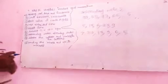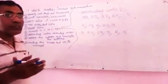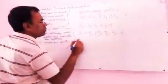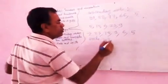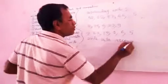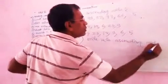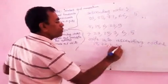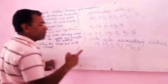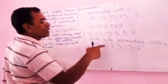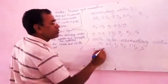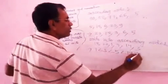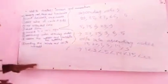Ascending order means increasing order — you write the smallest number first, then greater, then greater. For example, given 15, 22, 1, 5, 40, 3 — in ascending order you write: 1, 3, 5, 15, 22, 40. This is the ascending order.